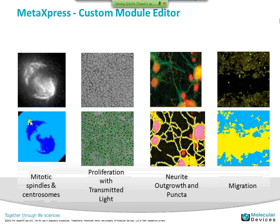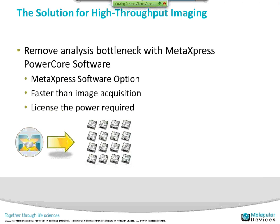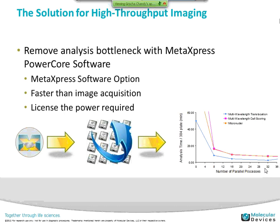Here are some other examples: finding mitotic spindles and centrosomes, doing simple segmentation with transmitted light, neurite outgrowth with anti-puncta analysis, counting puncta on neurites, and simple migration assays — either scratch or capillary-based — finding the area of change as cells migrate. We're driving acquisition speed faster on one side and we have flexible analysis on the other. To make sure analysis is not a bottleneck, that option is MetExpress PowerCore, which allows you to run each module across multiple cores of a computer. All custom modules and application modules are compatible with PowerCore.